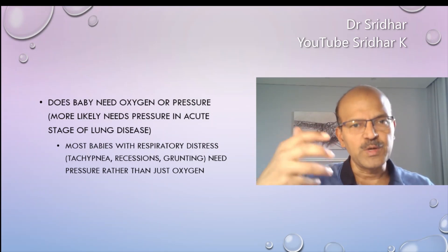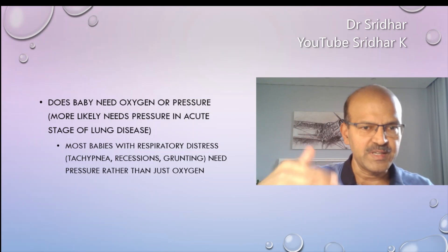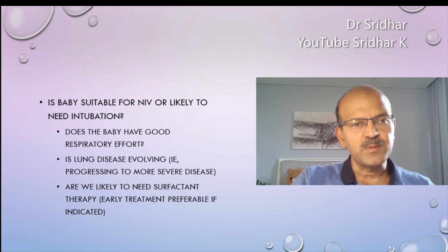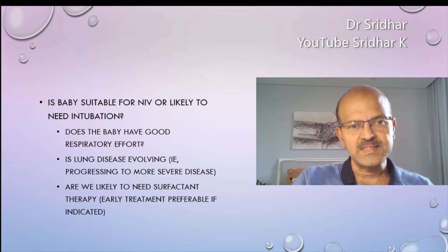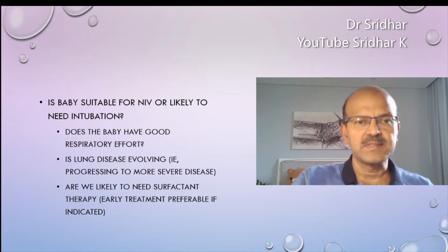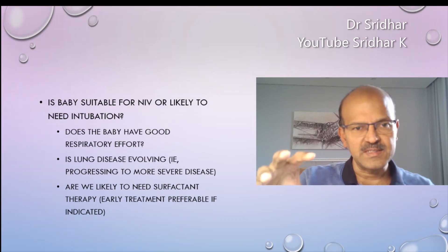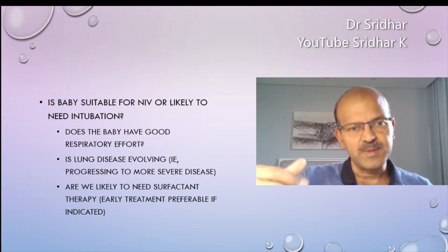Most babies who manifest with respiratory distress with tachypnea, recessions, and grunting need pressure rather than oxygen. Keep this in mind: giving oxygen alone through a nasal cannula does not help — you need some form of pressure, either non-invasive or invasive. The next question is whether the baby is suitable for non-invasive ventilation or needs intubation. Features suggesting NIV suitability include good respiratory effort and acceptable oxygen and carbon dioxide levels.